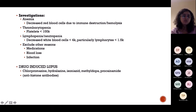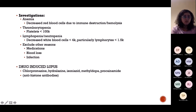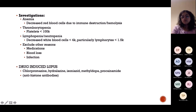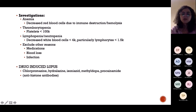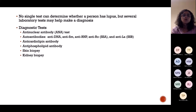Exclude other reasons for positive results, including medication. Drug-induced SLE can be caused by hydralazine, isoniazid (used in TB patients long-term), procainamide, and methyldopa. In drug-induced lupus, antihistone antibodies are present — this distinguishes it from primary SLE.